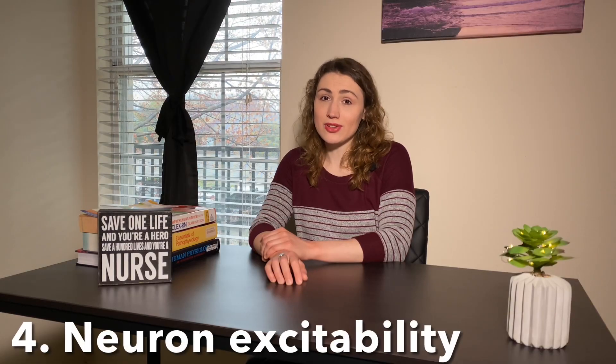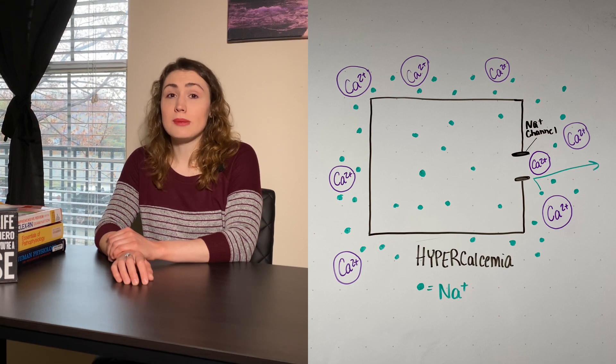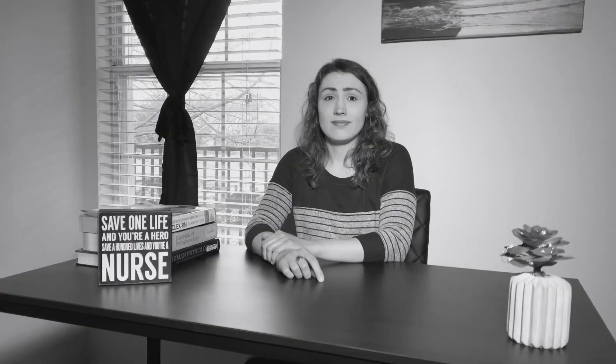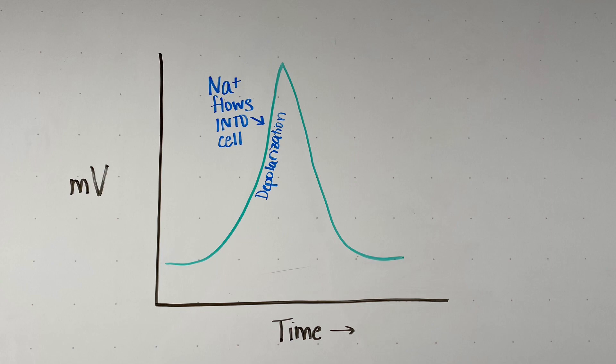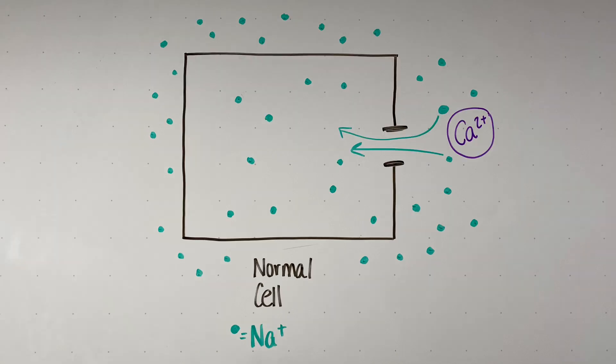Plasma calcium levels also affect the excitability of neurons. Calcium acts like a sodium channel blocker. When we have high calcium, calcium sits in front of the sodium channels and will not let sodium flow into the cell. The flow of sodium into a cell is responsible for action potentials. When calcium levels are normal, sometimes calcium is sitting in front of the sodium channel and sometimes it's not, so sodium will flow into the cell at a controlled rate, leading to controlled muscle contraction.